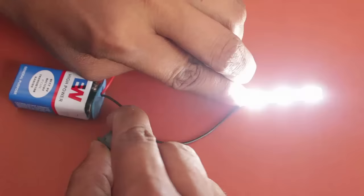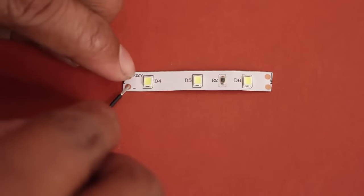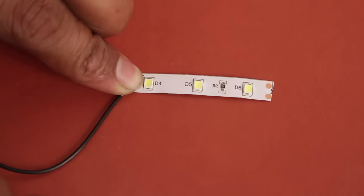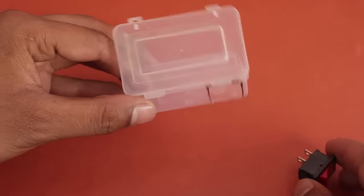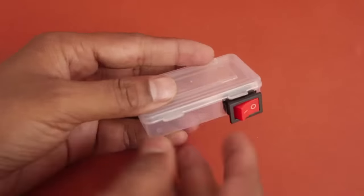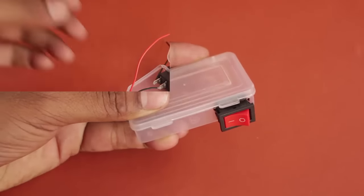With the help of the switch, you can turn them on or off. Now cut a rectangular slot in the plastic box to house the switch. You can operate the switch with ease.